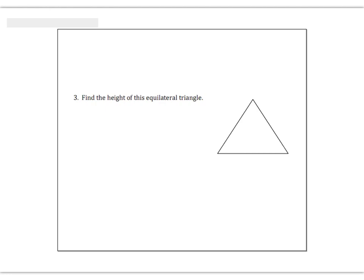Now we're going to talk about the second special right triangle. This is called the 30-60-90 triangle. If you imagine this being an equilateral triangle — meaning all three sides are congruent — and we want to try to find the height of this triangle. The height would start at a vertex and come down perpendicular to the base. We know that if it's equilateral, it's also equiangular, which means if we take 180 and divide it by 3, all the vertices have to be 60 degrees.